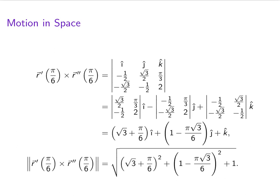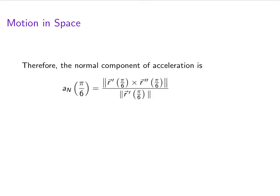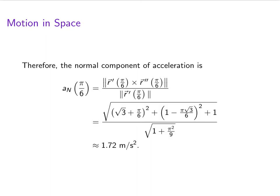And the last thing we need is the length of r prime of pi over 6 cross r double prime of pi over 6. Okay, long day's journey into night. This is what we get. We're going to have the normal component of acceleration at pi over 6 is the length of r prime cross r double prime divided by the length of r prime. So here's our final result. We have an approximate value of 1.72 meters per second squared.